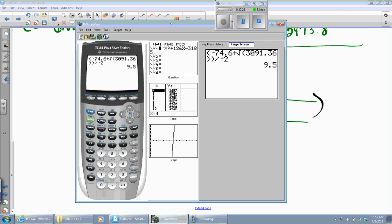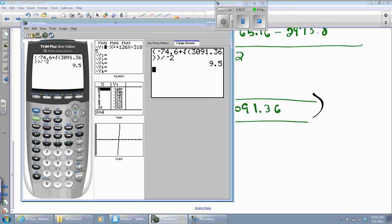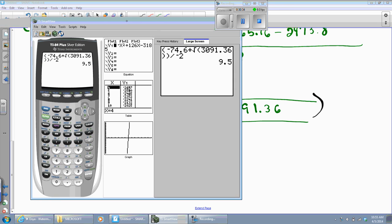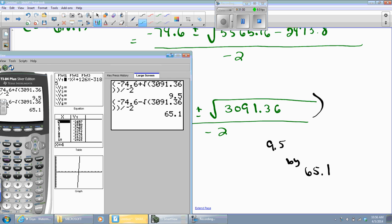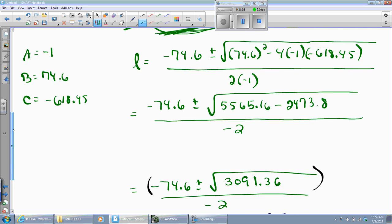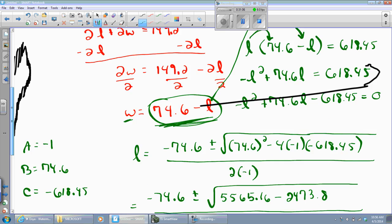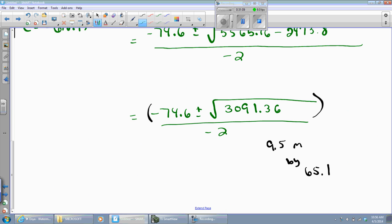I'm going to go to my calculator at this point. Putting the numerator in parentheses, I'm going to go with the quantity of negative 74.6 plus the square root of 3091.36. Now I'm going to close that quantity and close the numerator and divide it by negative 2. And there's one of my answers. Either the length or the width is 9.5 meters. To get the other one, I can change that positive to a negative and I will get the other one. So this means the rectangle is 9.5 meters by 65.1 meters.